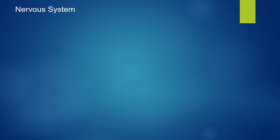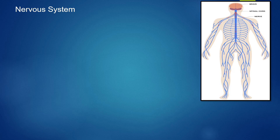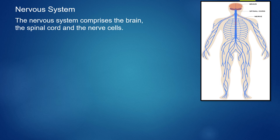Next: the nervous system. In this picture, there are many nerves connected to the brain. The nervous system comprises the brain, the spinal cord, and the nerve cells. These three parts make up the nervous system.